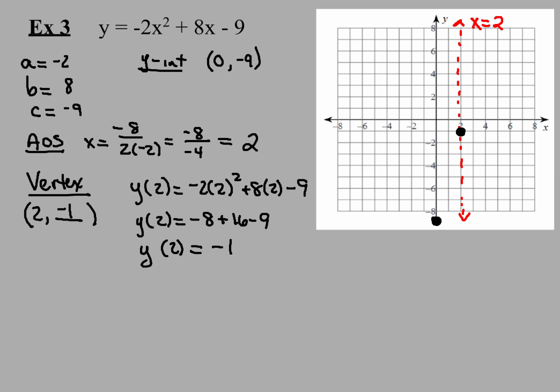Now the movement pattern I'm going to use is based on my a number. My a value is -2, which tells me two things. One, my parabola is going to open down. Normally, I move 1, 2, 3, and then 1, 4, 9 is my movement pattern. But since I have an a value of -2, I'm going to multiply the 1, 4, 9 by -2. So 1 times -2 is -2, 4 times -2 is -8, and 9 times -2 is -18.